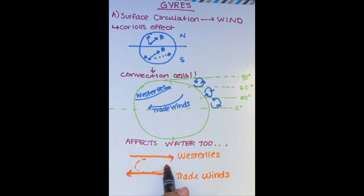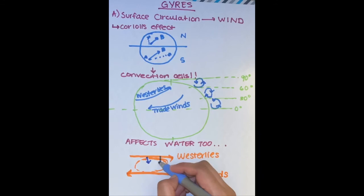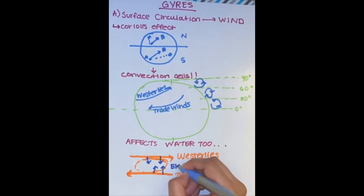Due to the Coriolis effect, something called the Ekman transport occurs. The Ekman transport pushes perpendicular or 90 degrees from the direction of the wind.